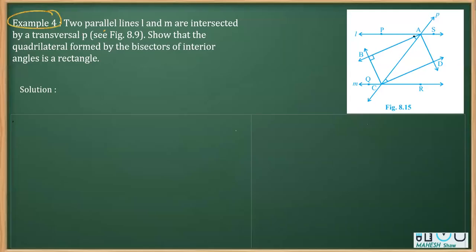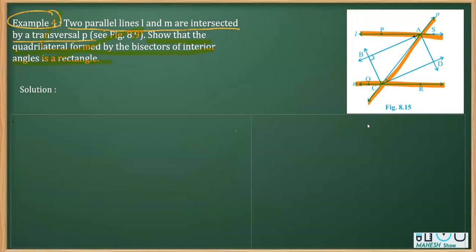This is Example 9 from the chapter on Quadrilaterals, Class 9. It says two parallel lines l and m are intersected by a transversal p. We can clearly see these are two parallel lines intersected by transversal p, and we have to show that the quadrilateral formed by the bisectors of these interior angles forms a rectangle — meaning we need to prove this figure is a rectangle.